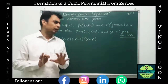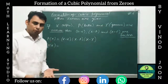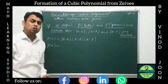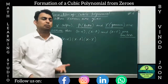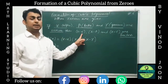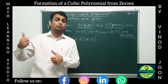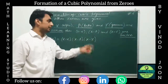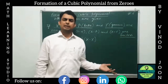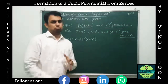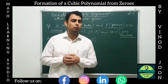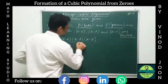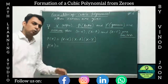It is a general rule that if alpha, beta, and gamma are the zeros of the polynomial, then we can say x minus alpha will be one factor — remember the factor theorem from grade 9. The second factor will be x minus beta, and the third factor will be x minus gamma. To find the polynomial from the factors, we simply multiply them.